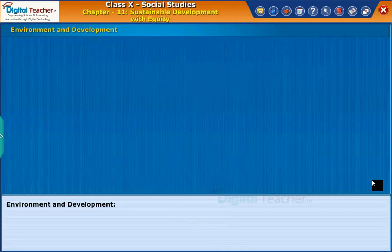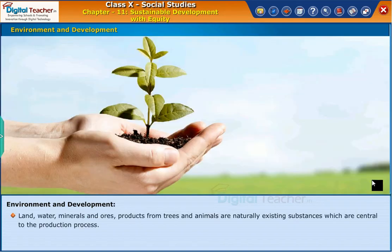Let us start by recalling the role of environment in development. Land, water, minerals and ores, products from trees and animals are naturally existing substances, which are central to the production process.